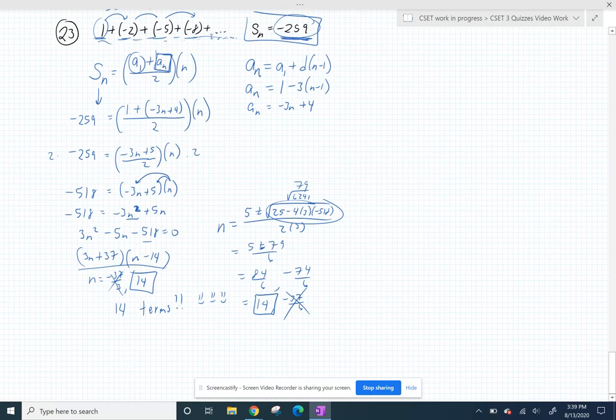So it turns out you don't actually have to take this very long to get that. So on your calculator, you could just keep this going to 14 terms, add them all up and you should get negative 259. Awesome.